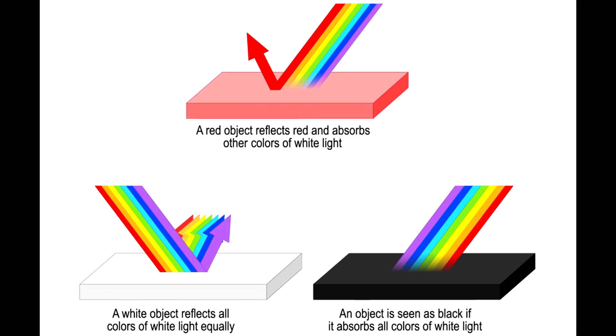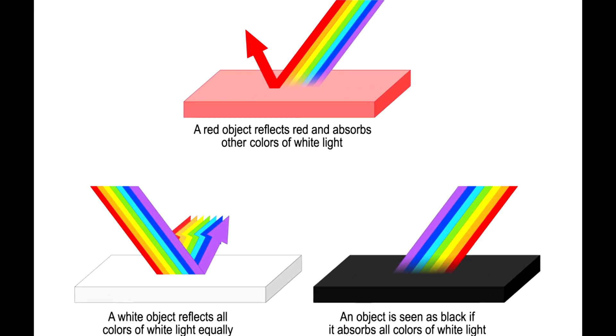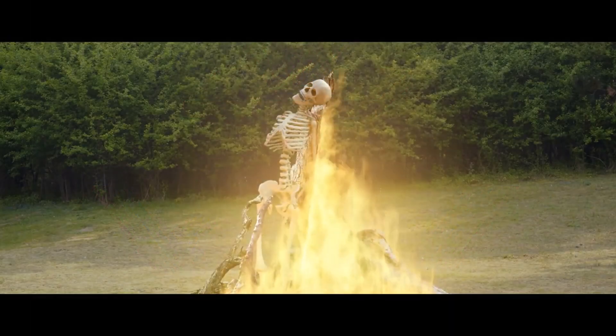This explains why objects have certain colors. They absorb some light waves and reflect others, and is not the work of sorcerers.